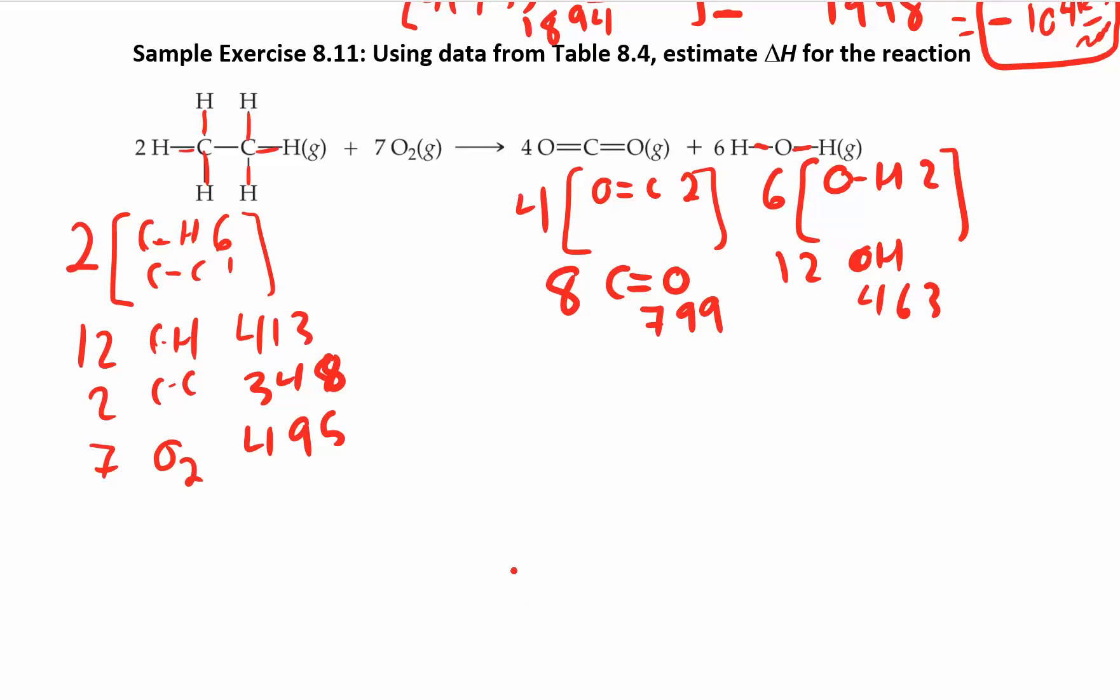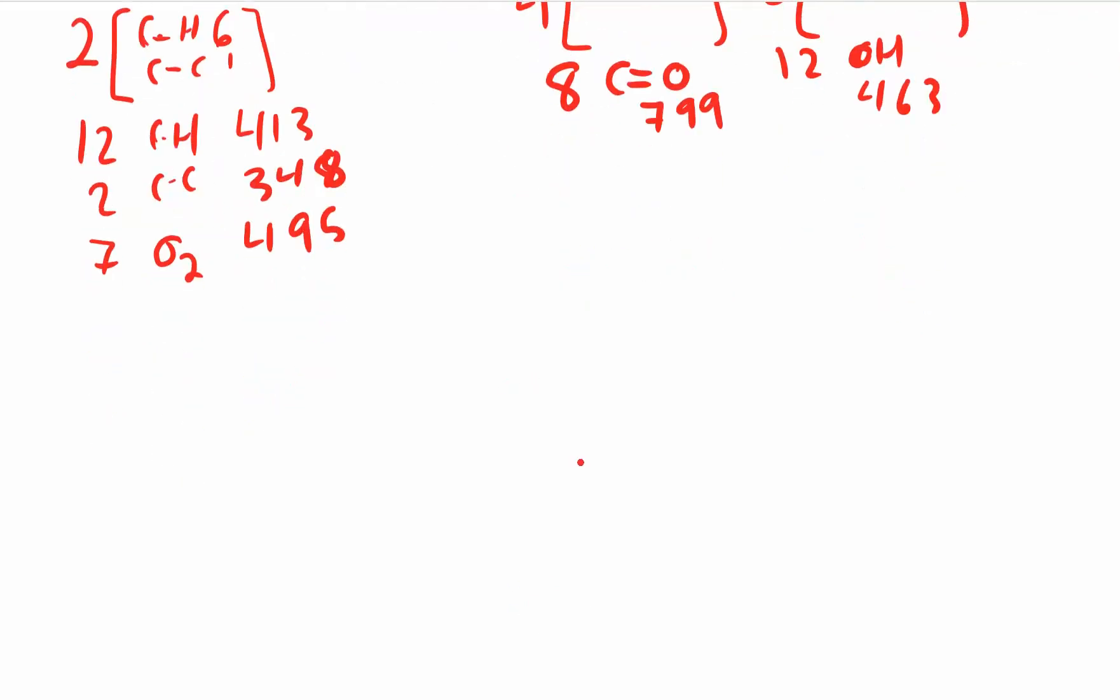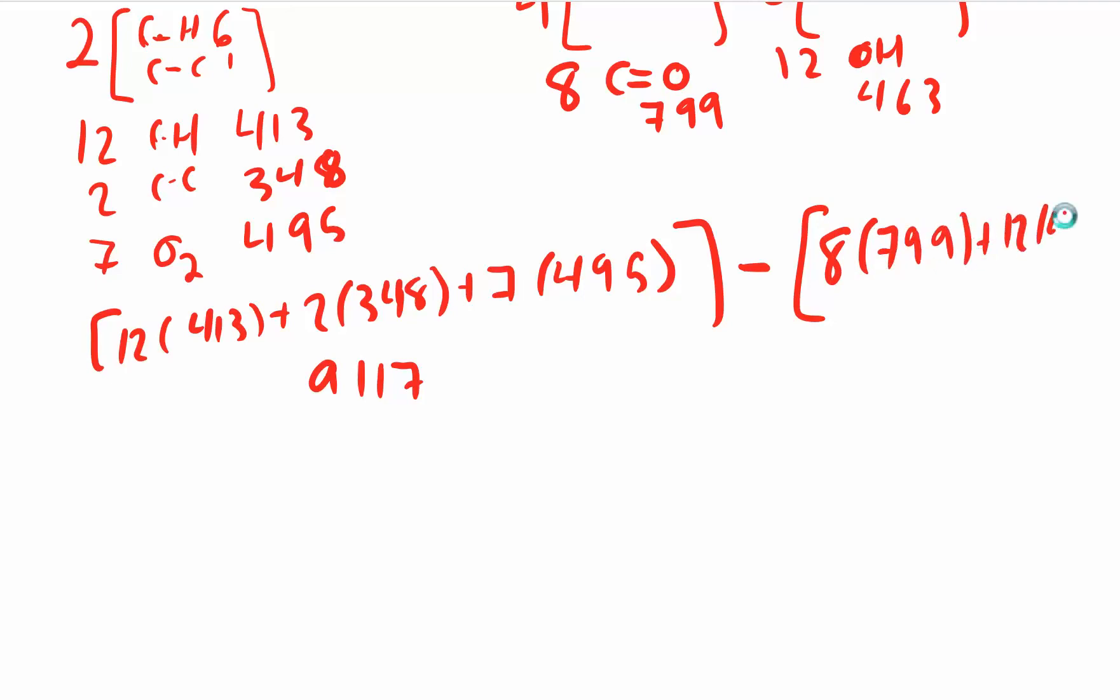When you look at all of that together, I have 12 times 413 plus 2 times 348 plus 7 times 495. You're going to add up all those numbers. I got 9117. I'm going to subtract out all the other ones on this side. So I have 8 times 799 plus 12 times 463. That's 11948. When you work that out, you get negative 2831 kilojoules per mole.